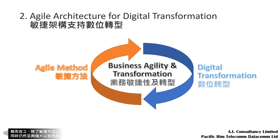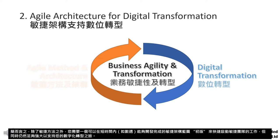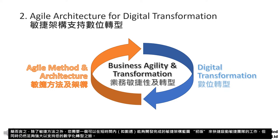In short, besides Agile methods, you still need a first cut of an Agile architecture blueprint that can be developed in a short period of time — like weeks — to jump-start Agile teams' work, but at the same time still robust enough to support your digital transformation journey.